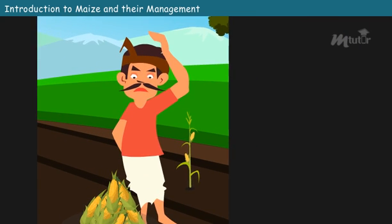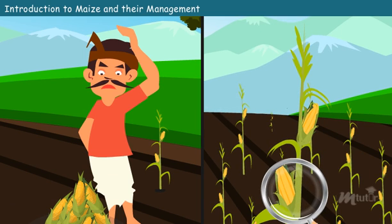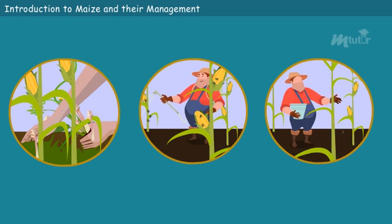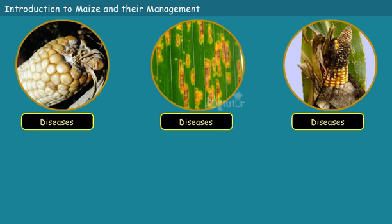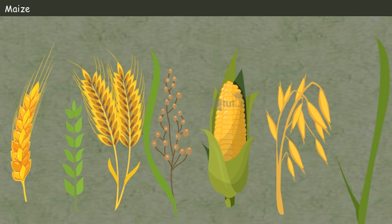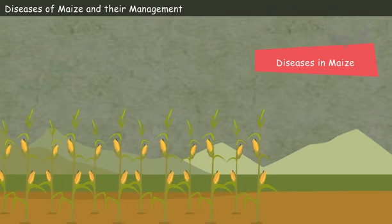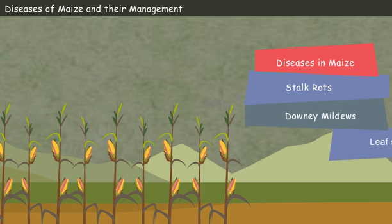Hence, it is of utmost importance that every maize farmer learns to identify diseases in earlier stages, as well as implement the right control measures to increase the yield. Maize is an important cereal crop belonging to the family Poaceae. The scientific name of maize is Zea mays. Some of the diseases which commonly affect the maize crop are stalk rots, downy mildews, and leaf spots. Let us discuss one by one in detail.